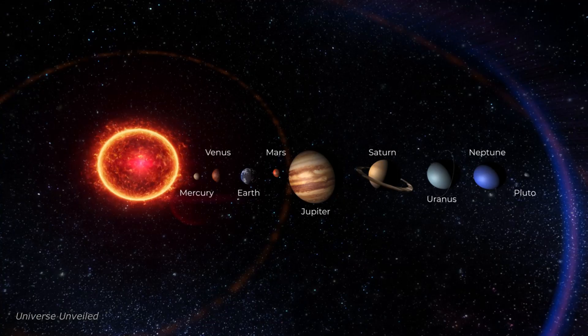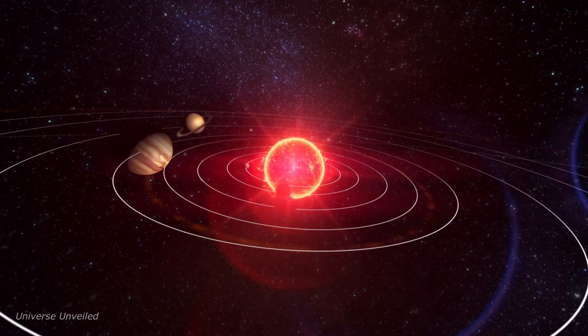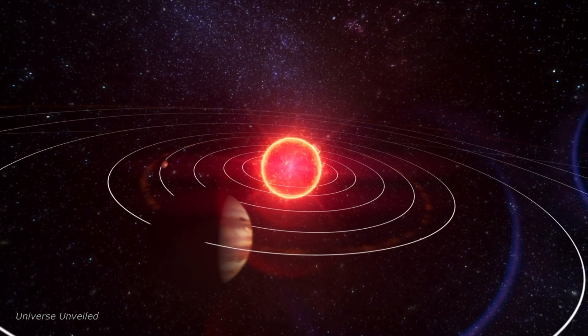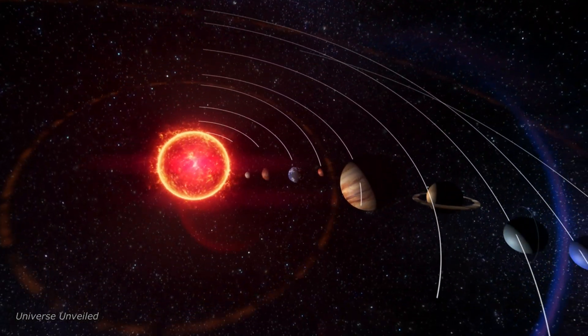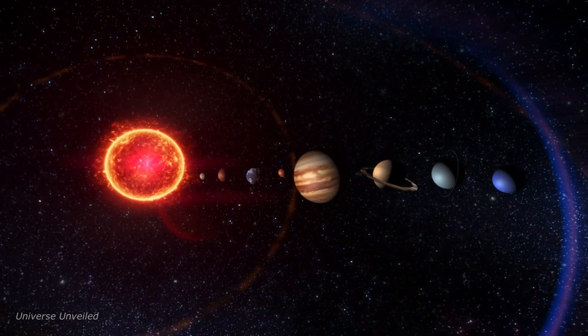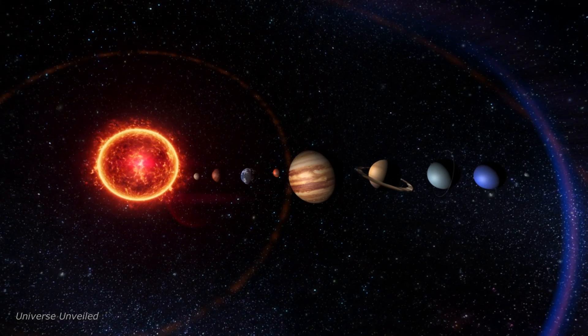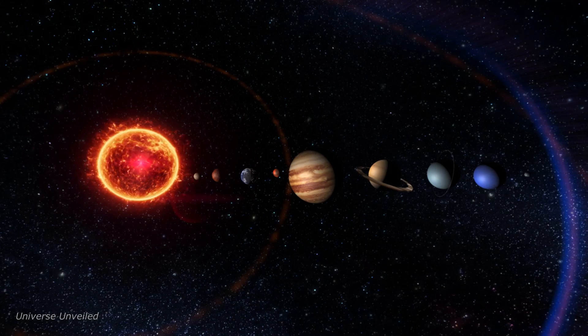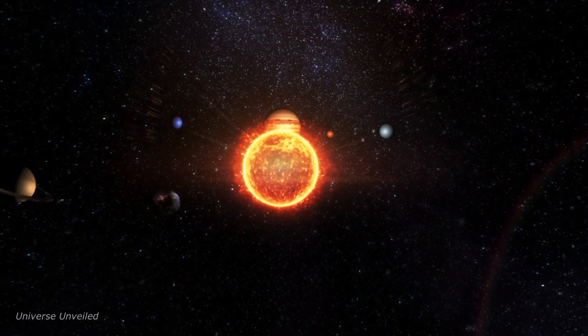The planet in question, named YZ Ceti B, has a rather unique relationship with its star. It orbits its star in a brisk two Earth days, resulting in a strong interaction with the star's magnetic field. This interaction is so intense that it emits strong radio waves, which, quite impressively, can be detected all the way back here on Earth.